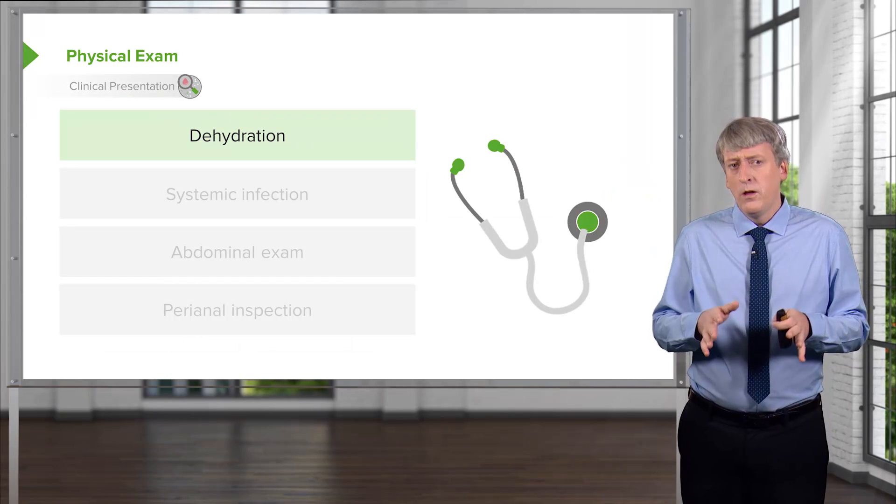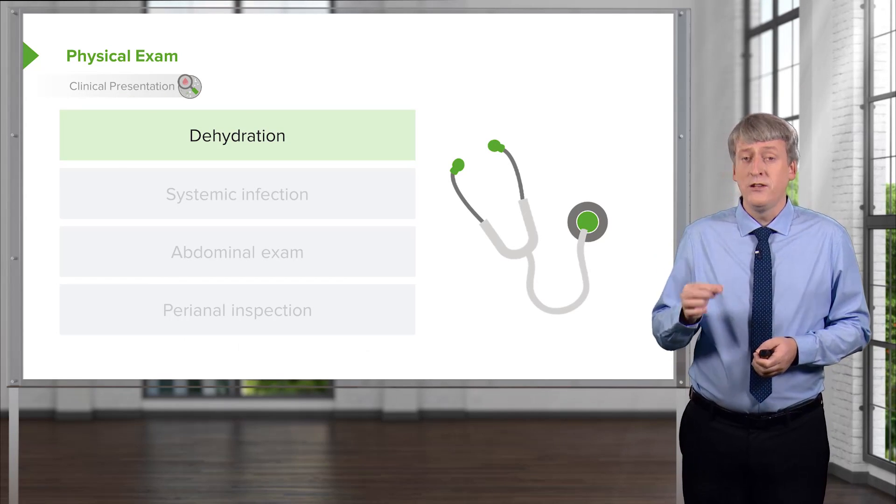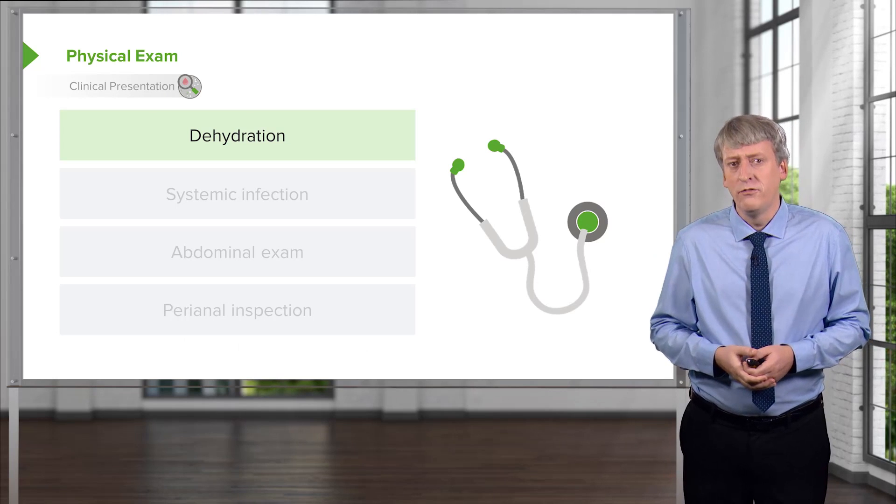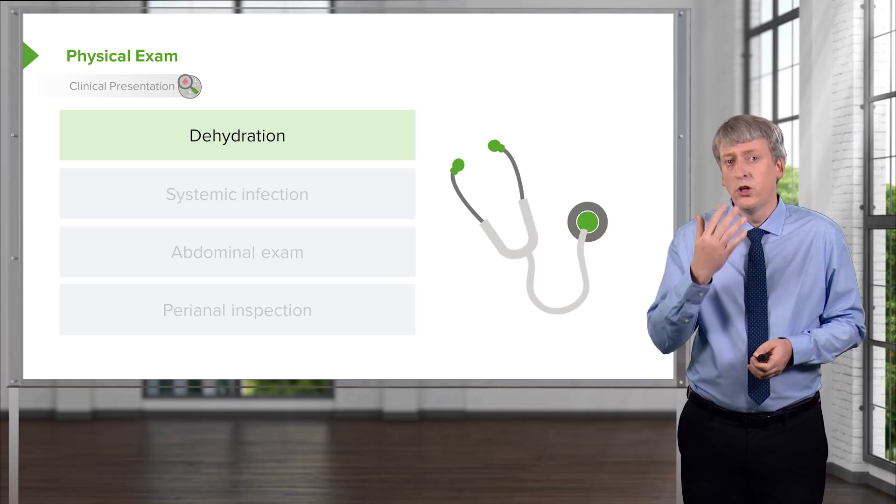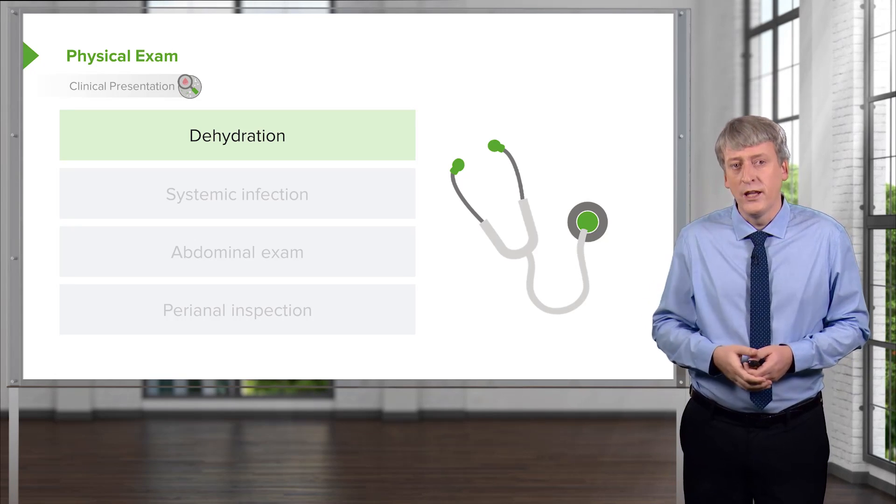On exam, it's critically important to look for signs of dehydration. Tenting is rare and is only at extreme ends of dehydration. Mostly, you're going to look at mucous membranes and see if they're moist, see if the child is making tears when they cry.